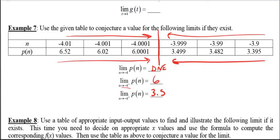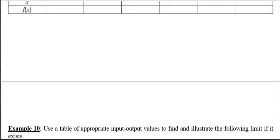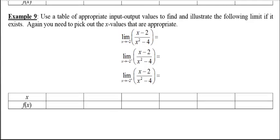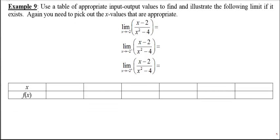Let's do another example — limits from a table. The formula this time is kind of similar to the last one but upside down: x minus 2 over x squared minus 4. Take the limit as x goes to negative 2, from the left, from the right, and then the full limit. You pick the x values and find the corresponding f of x values, then see if you can determine these limits from the table — or tell what happens if they don't exist. Press pause now and come back when you're ready.